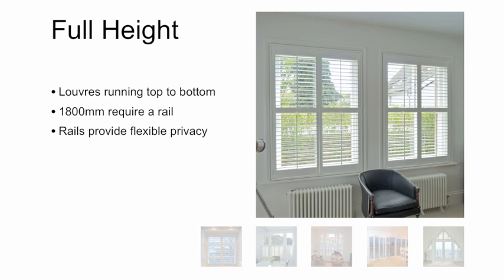The rail will usually be positioned to match a corresponding rail on the window, so when you look through the louver blades you do not see the shadow of the window rail through the louvers. With a rail, you can also choose to open the louver blades independently either side of the middle rail, giving you more flexibility and privacy.